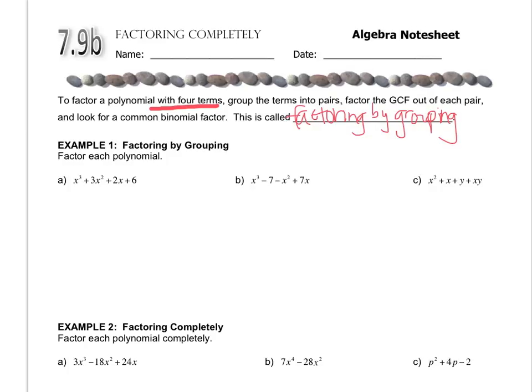So let's look at some that are specifically designed for factor by grouping. I see that this polynomial in letter a has four terms, so I'm going to look for factor by grouping. I'm going to divide the first two terms by x squared, because that's their GCF, and when I do that, I'll get x squared times x plus 3.